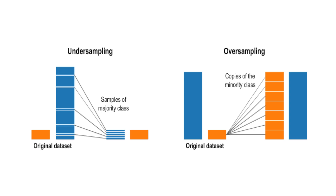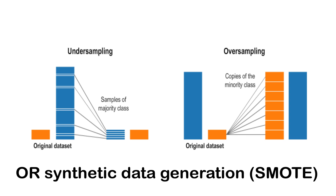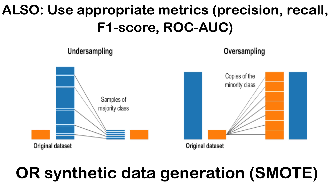The solution? Use techniques like oversampling the minority class, undersampling the majority class, or synthetic data generation like SMOTE. Always use appropriate metrics that account for class imbalances — like precision-recall curves instead of just accuracy. More on that later.